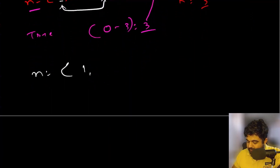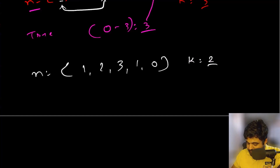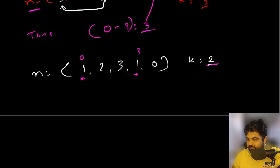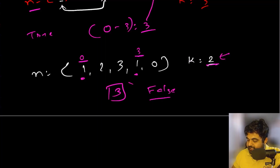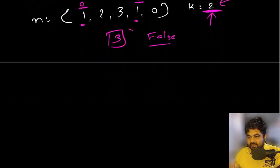Let's understand it with one more example. Suppose our given N is equal to [1, 2, 3, 1, 0] and our given K value is equal to two. Again, we have the values located at index position zero and index position three that contain the same value. But the current K value is equal to two, and the difference between these two indices is three. Since three is not less than or equal to two, we need to return false because there do not exist any two duplicated values that are within two steps of each other.